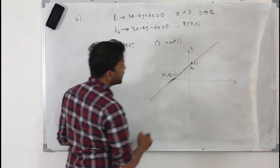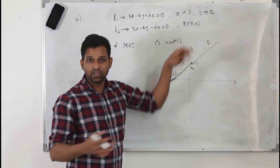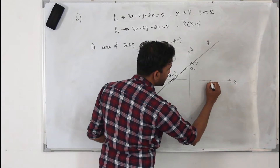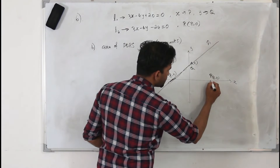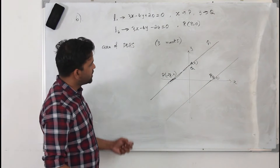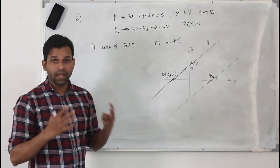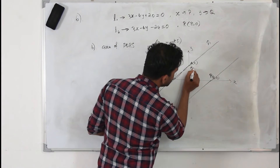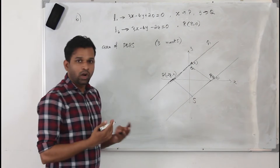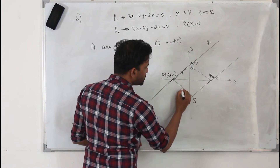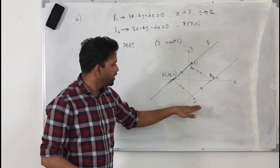L2 is parallel to L1 and passes through R(8, 0). Joining P, Q, R, and an unknown point S forms the parallelogram PQRS. We have coordinates for P, Q, and R but not S. The question asks for the area of this parallelogram, which has 3 marks.